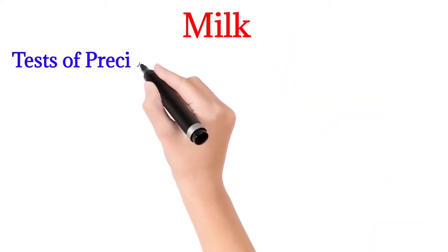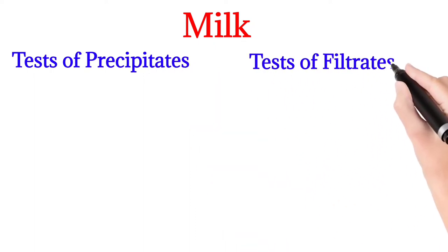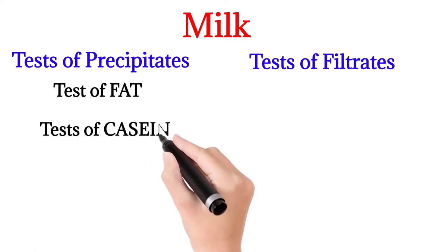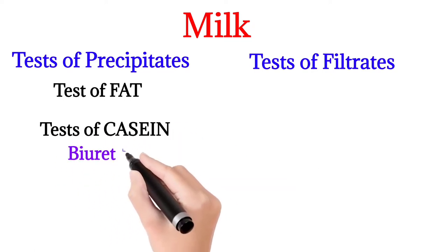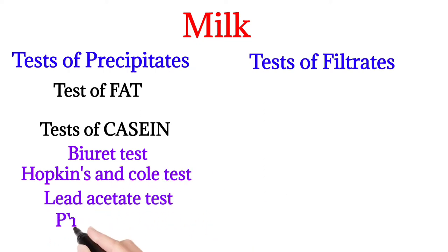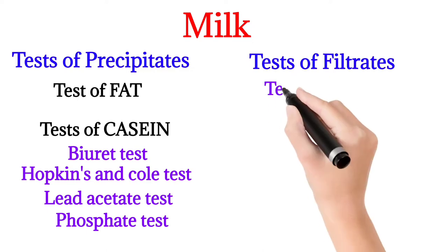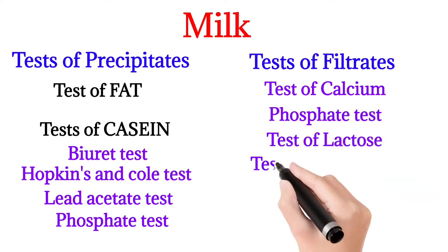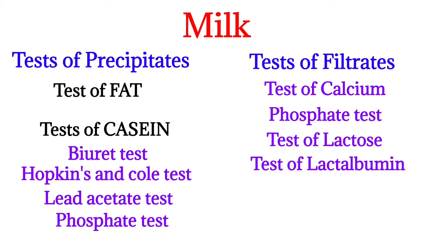Now we'll see milk analysis. It is divided into two parts: tests of precipitate and tests of filtrate. Tests of precipitate include tests of fat and tests of casein, which includes the biuret test, Hopkins Cole test, lead acetate test, and phosphate test. Tests of filtrate include the calcium test, phosphate test, test of lactose, and test of lactalbumin.